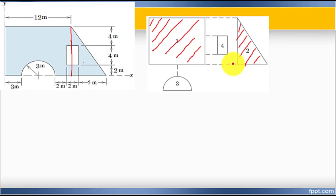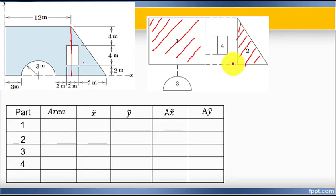The first step is just dividing this composite shape into very simple shapes. Now let me show you the table. This table helps us calculate the centroid.